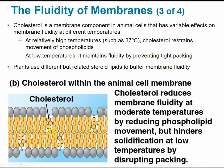Some membranes also contain cholesterol, a steroid and another type of lipid in animal cells, which plays a role in the degree of fluidity at different temperatures. At relatively higher temperatures like body temperature, cholesterol restrains the movement of the phospholipid, making it more stable and sturdy so it's not too wiggly. At low temperatures, it maintains fluidity by preventing that tight packing, taking up space to allow a little more give in the membrane. So it reduces movement at moderate temperatures but hinders solidification at lower temperatures by preventing tight packing of the phospholipids.